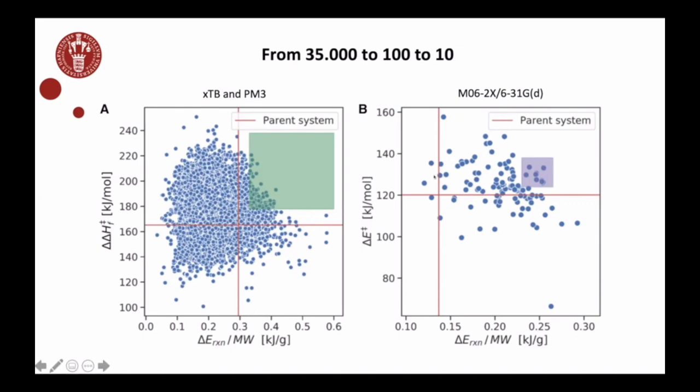Here we picked about 100, which is what you can test relatively easily with density functional theory. The red line here is the corresponding computed values for the parent system.